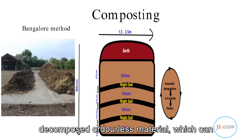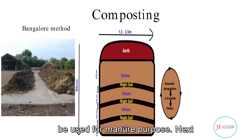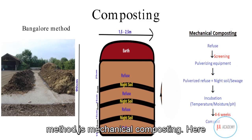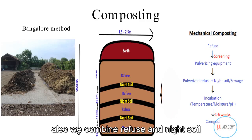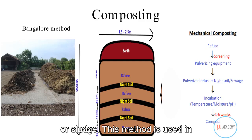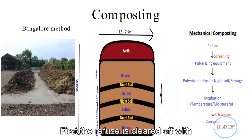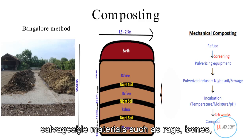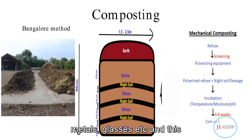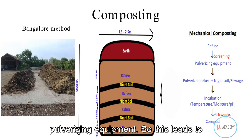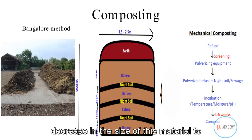At the end of four to six months, the Bangalore method results in a well-decomposed, odorless material suitable for use as manure. In mechanical composting, refuse and night soil or sludge are also combined, and this method is used where large-scale processing is required. First, the refuse is cleared of salvageable materials such as rags, bones, metal, and glass.